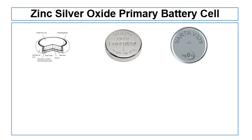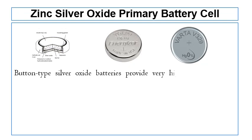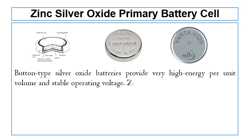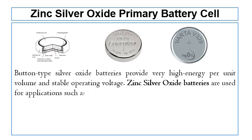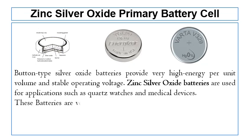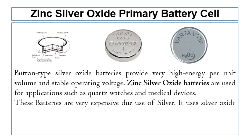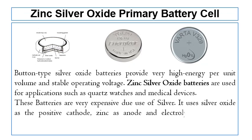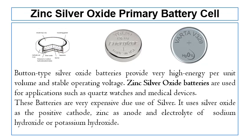Zinc silver oxide primary batteries are button type batteries that provide very high energy per unit volume and stable operating voltage. Zinc silver oxide batteries are used for applications such as quartz watches and medical devices. These batteries are very expensive due to use of silver. A silver oxide battery uses silver oxide as cathode and zinc as anode, with an electrolyte of potassium hydroxide or sodium hydroxide.